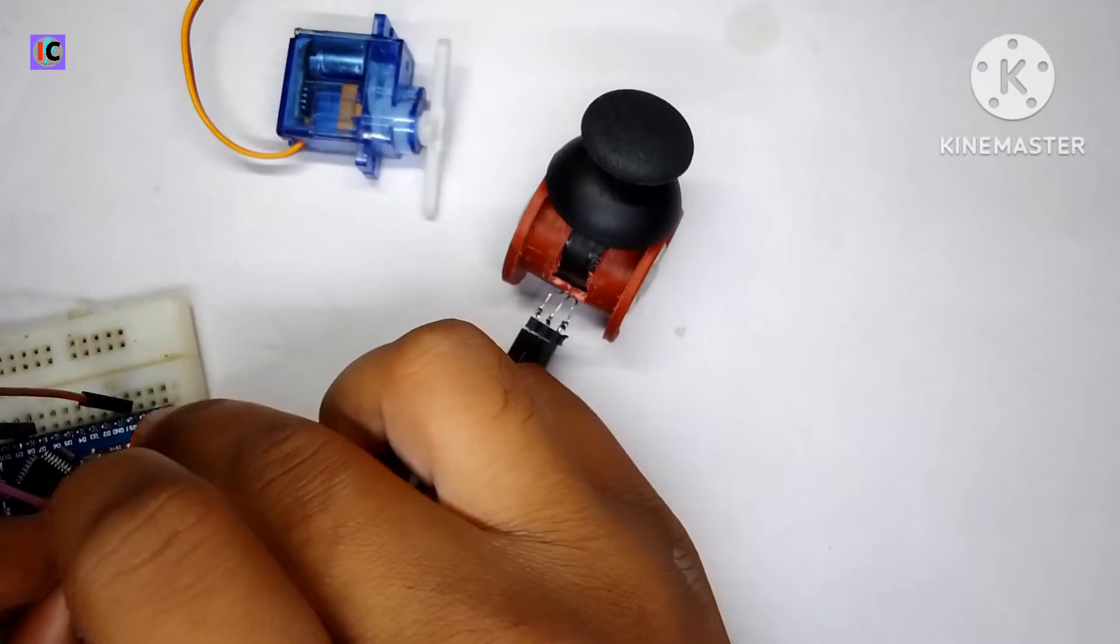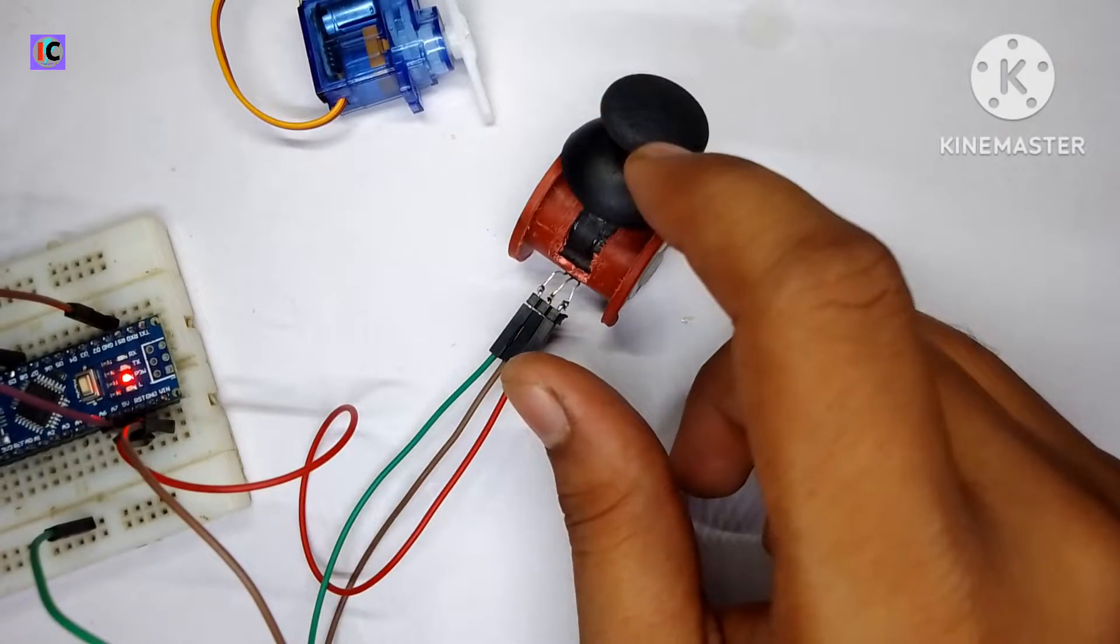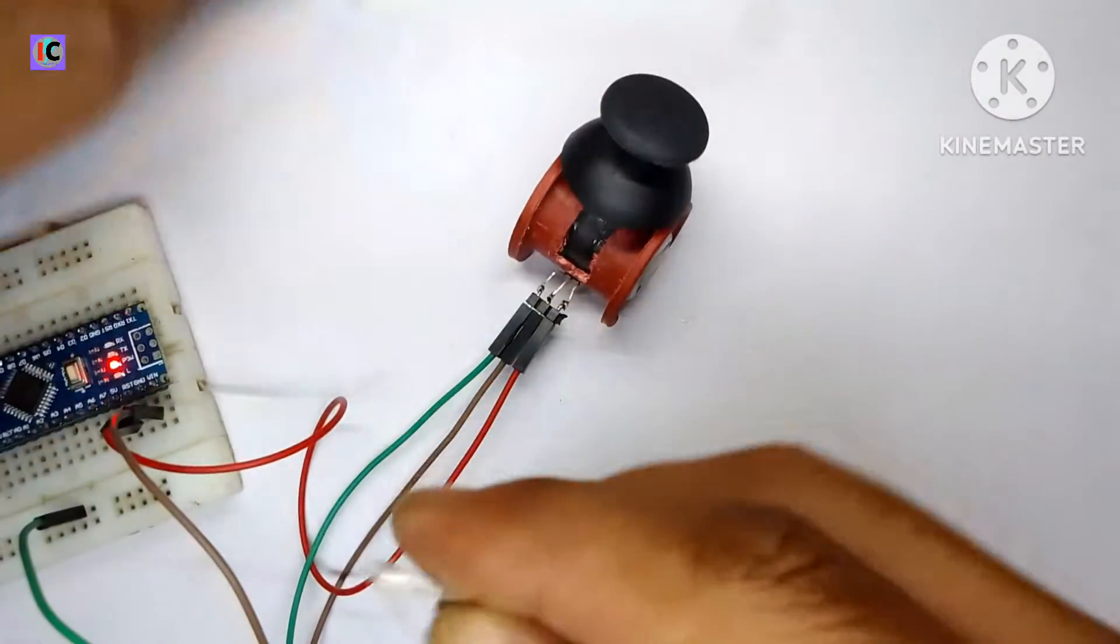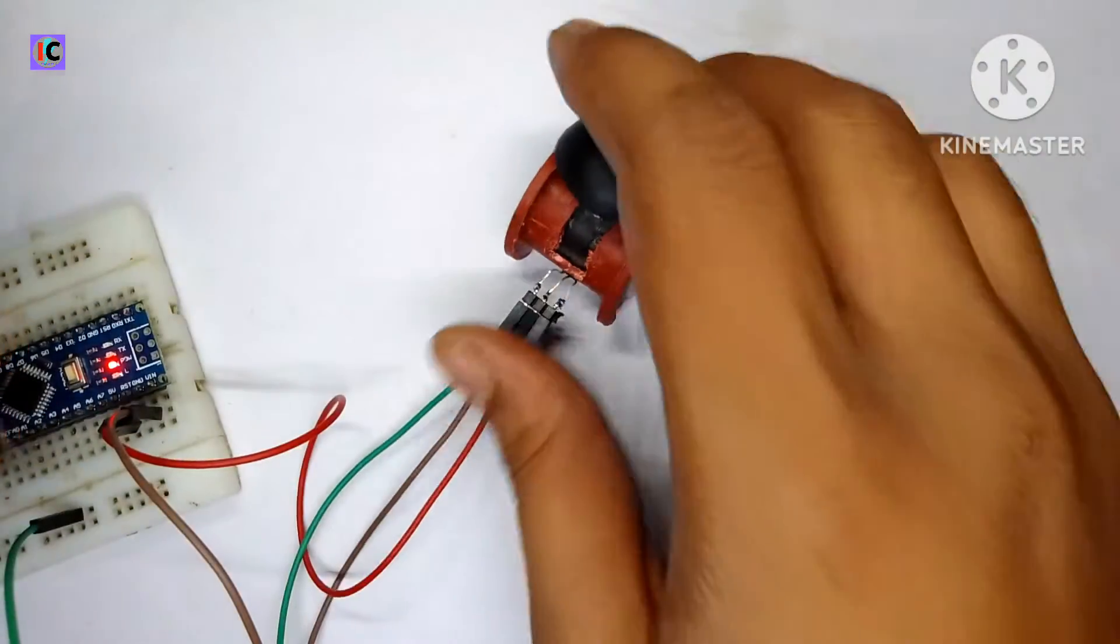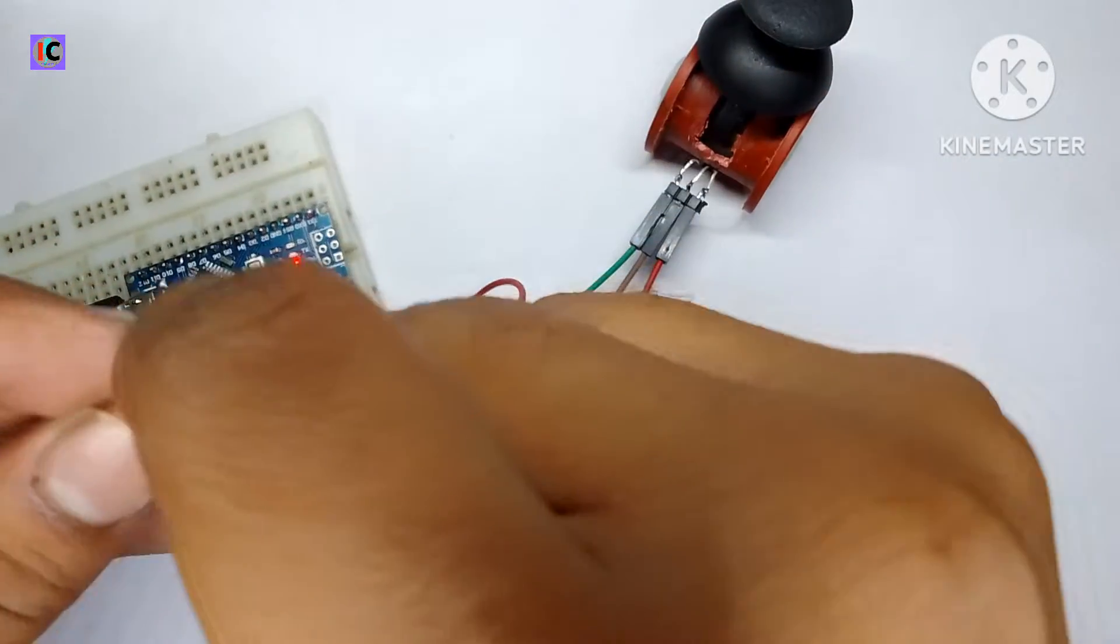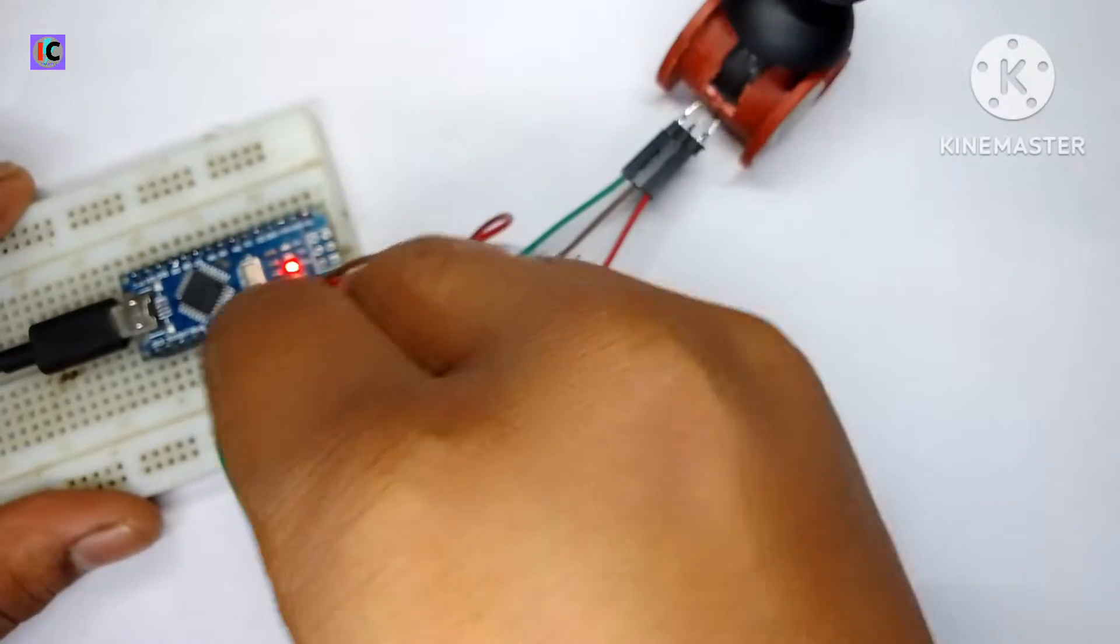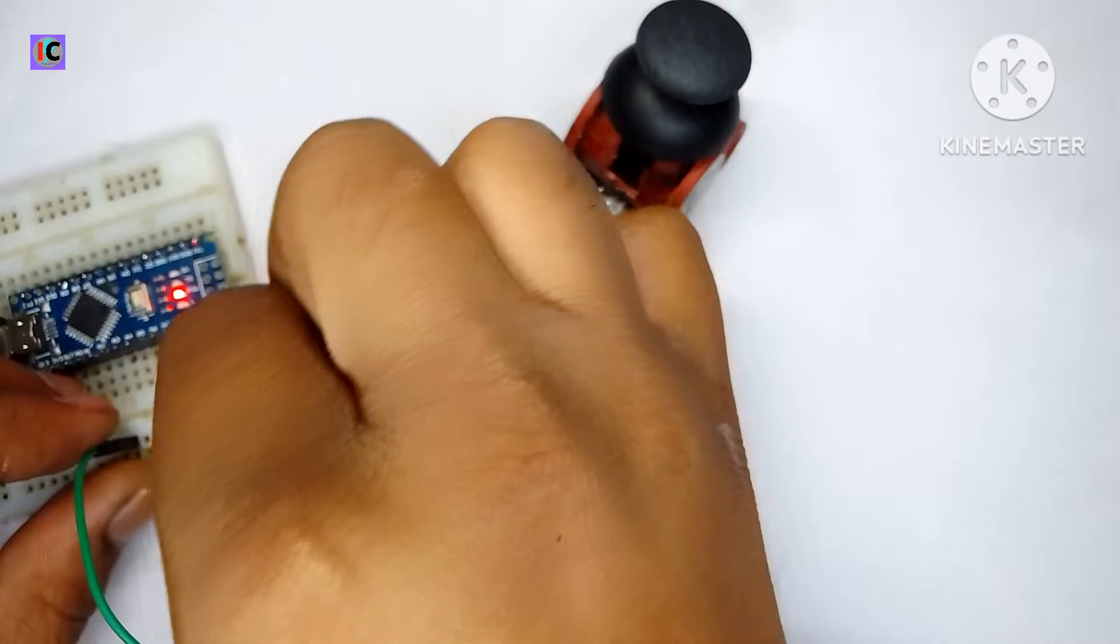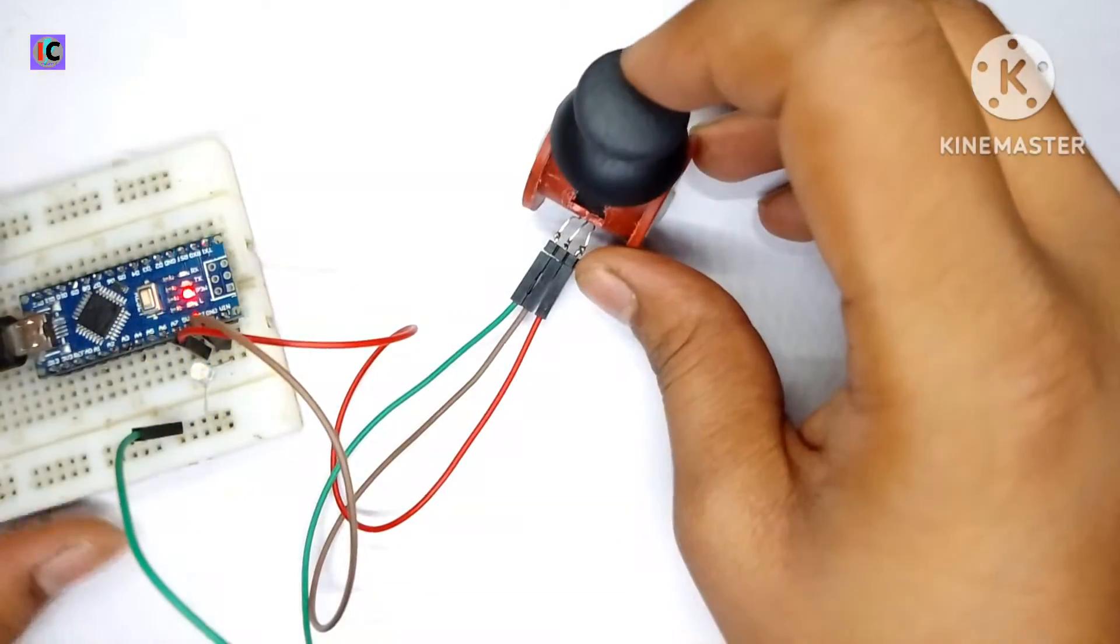Now I'll show you the output of this joystick and visualize it using an LED. For this, I'm connecting the LED's positive pin to the analog sensor, the joystick output, and connecting the ground.